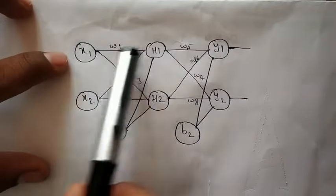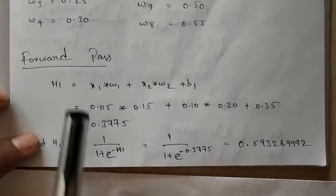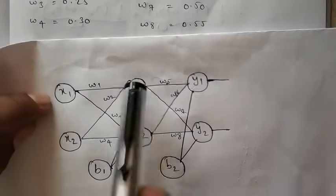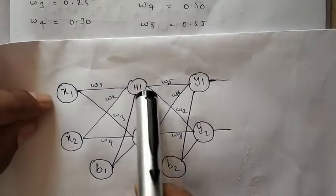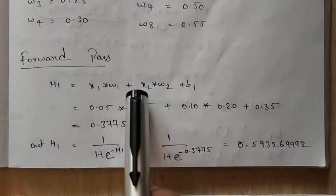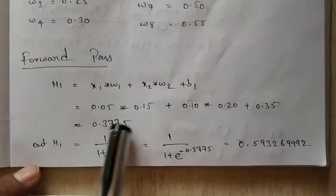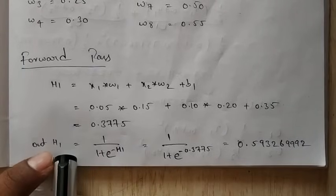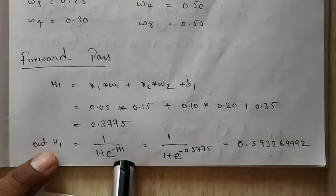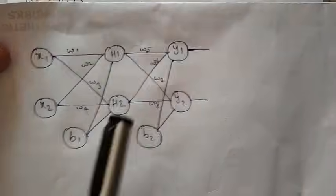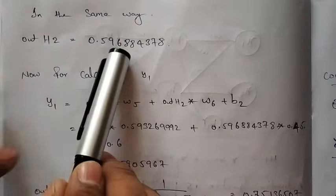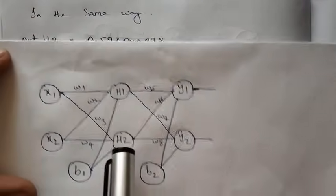We pass these values through the network to get the output — forward pass first. We are calculating at h1: h1 = x1·w1 + x2·w2 + b1, adding the bias. We get the value at h1. Then we apply the activation function on it: output of h1 = 1 / (1 + e^(-h1)). We have calculated for h1. In the same way, we calculate for h2 and get the value of h2.